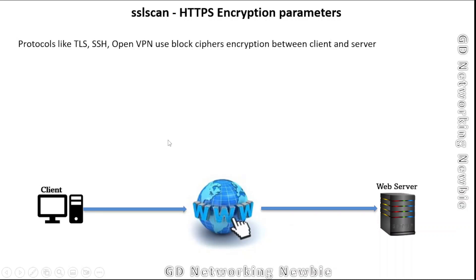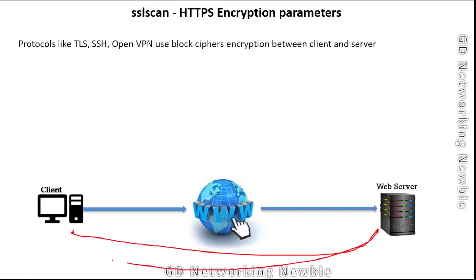We know that for communication between client and server, HTTP is not secure. To make this communication secure we can use different protocols like TLS, SSH, or OpenVPN, and those protocols themselves make use of encryption techniques including block ciphers.